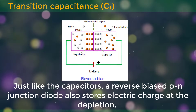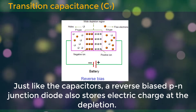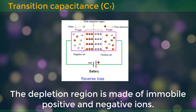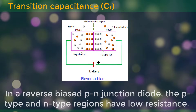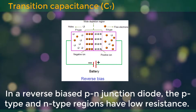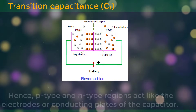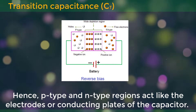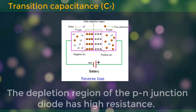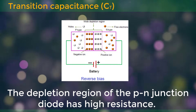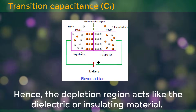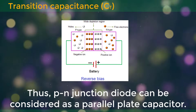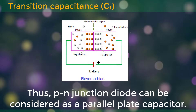Just like capacitors, a reverse biased PN junction diode also stores electric charge at the depletion region. The depletion region is made of immobile positive and negative ions. In a reverse biased PN junction diode, the P-type and N-type regions have low resistance. Hence, P-type and N-type regions act like the electrodes or conducting plates of the capacitor. The depletion region of the PN junction diode has high resistance. Hence, the depletion region acts like the dielectric or insulating material. Thus, a PN junction diode can be considered as a parallel plate capacitor.